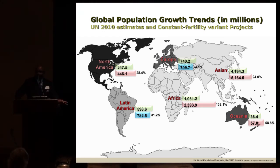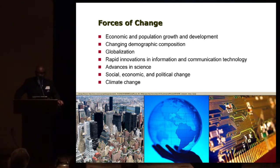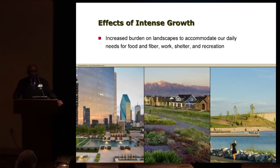We have different sets of problems — in some areas rapid growth, in others shrinking. When we look at population dynamics and forces of change ranging from globalization to climate change, the primary challenge is how to accommodate this growing population, because they place increased burden on landscapes to accommodate our daily needs for food, fiber, work, and shelter.